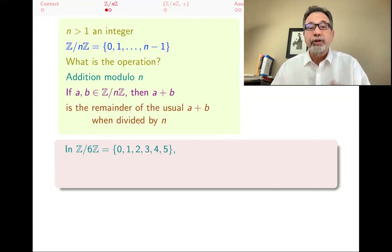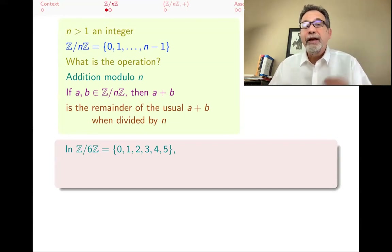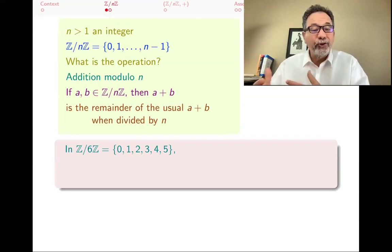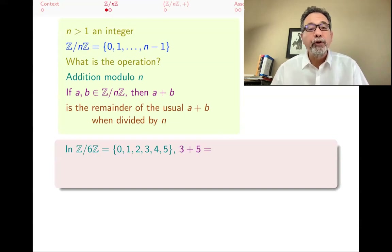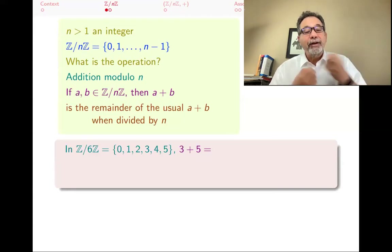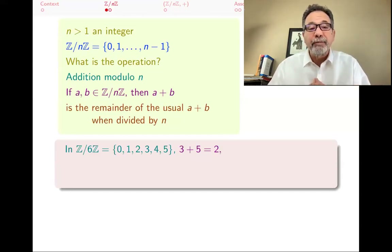Let's look at an example. Someone has picked n equals 6, and we are looking at Z mod 6Z, which consists of the set {0, 1, 2, 3, 4, 5}. These are really remainders of numbers after you divide them by 6. For example, what would be 3 plus 5? In first grade it was 8, but now you take out as many sixes as possible, because n is 6, and you get 2 as the remainder. In the world of Z mod 6Z, 3 plus 5 is 2.